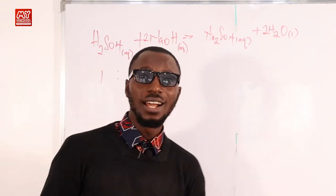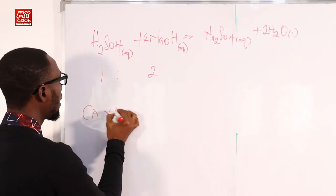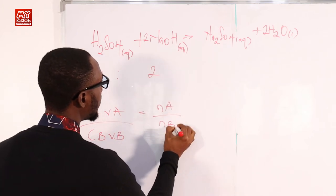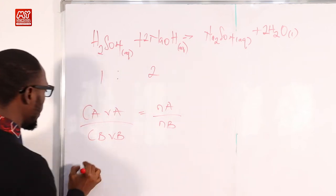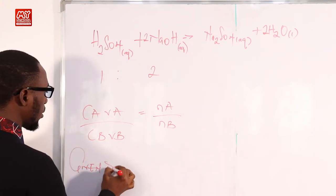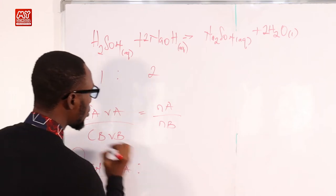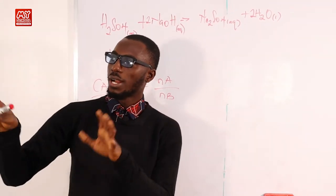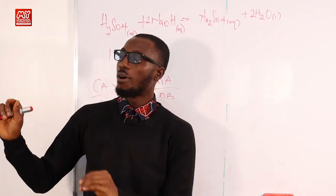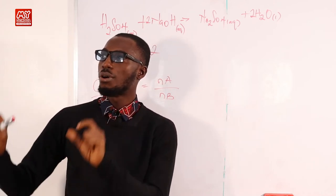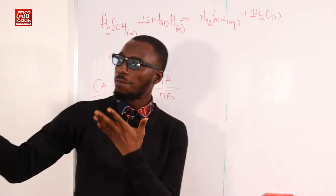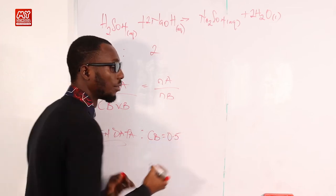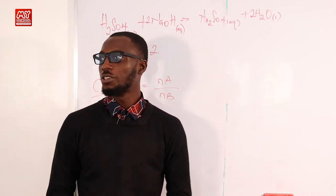Remember the formula: CA·VA / CB·VB = NA / NB. Now let's slot in our given data. The concentration of sodium hydroxide, that is CB, is 0.5. We would exactly neutralize 10 cm³ of 1.25 molar sulfuric acid, so VA = 10 cm³ and CA = 1.25.